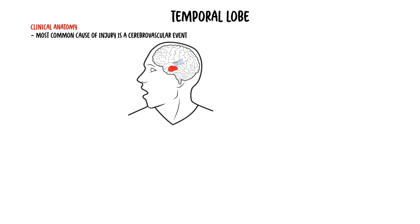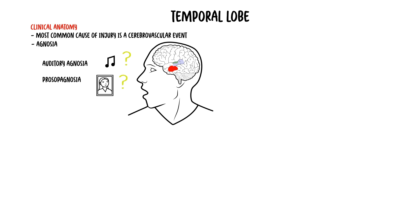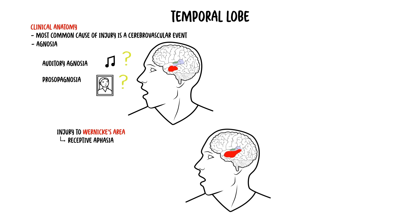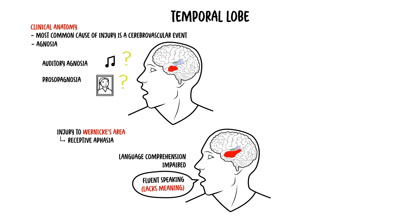The most common cause of temporal lobe injury is cerebrovascular events, such as a stroke. A patient who has injury to the temporal lobe presents with agnosias, which are recognition deficits. Agnosia comes from the Greek word meaning ignorance. Injury to Wernicke's area presents with receptive aphasia. People with Wernicke's aphasia are able to speak fluently, but their speech lacks meaning, because their language comprehension is impaired — they don't understand the information they are receiving, hence the term receptive aphasia.